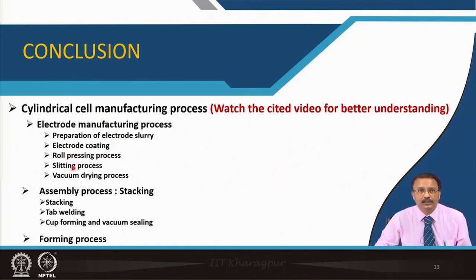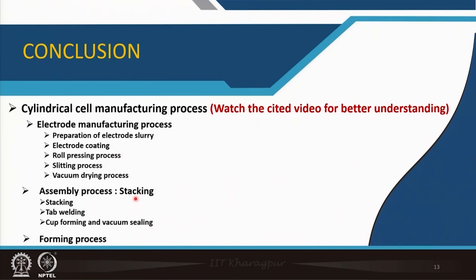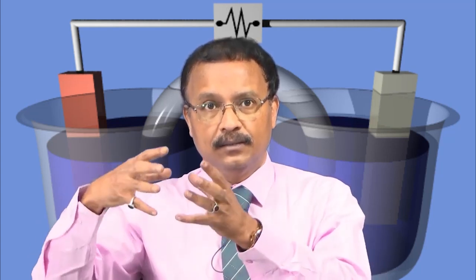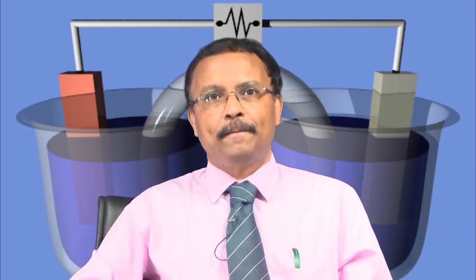Roll processing, slitting process, and vacuum drying process are the same as for cylindrical cells. The assembly process includes stacking and tab welding, which are very important. Then cup forming gives the pouch cell a good shape, followed by vacuum sealing — usually done in three stages: first and second stage sealing, then the forming cycle where gases come out and fill inside the pouch, you pierce the pouch to release the gas, and then seal it again for the final stage. You get your pouch cell in the process. Thank you for your attention.